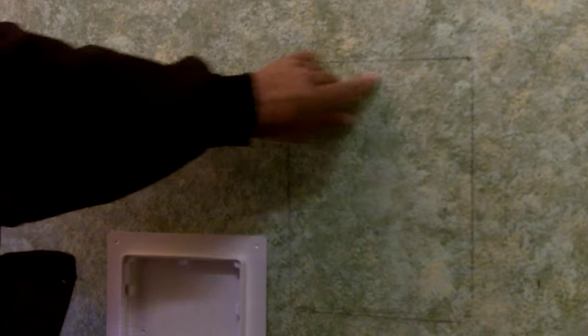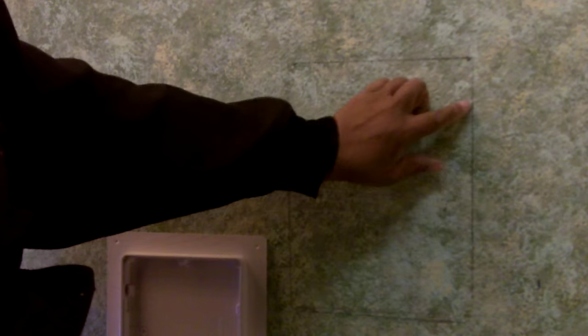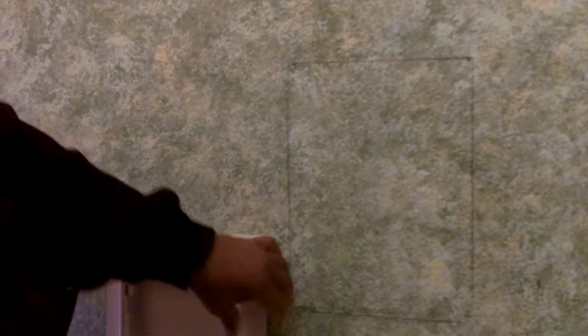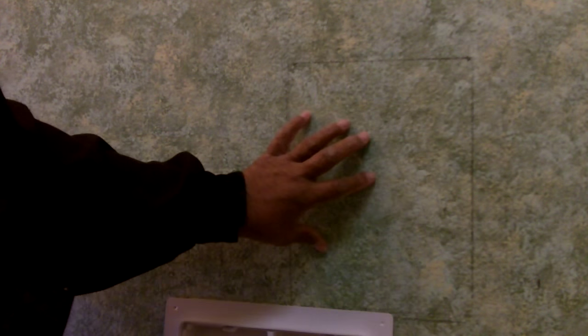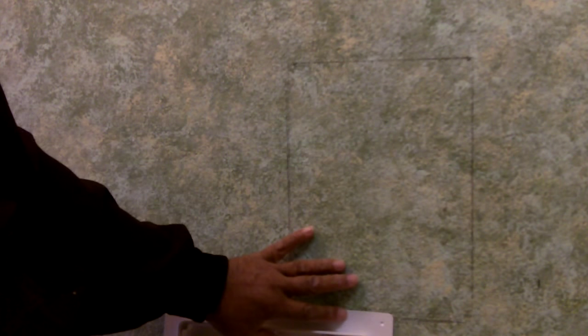Those are my reference lines. Okay, so I've got the outline here of my panel. Now, if I were to cut it just like this, well, the access panel would fall right through because it's the same dimensions exactly as the panel itself, right?